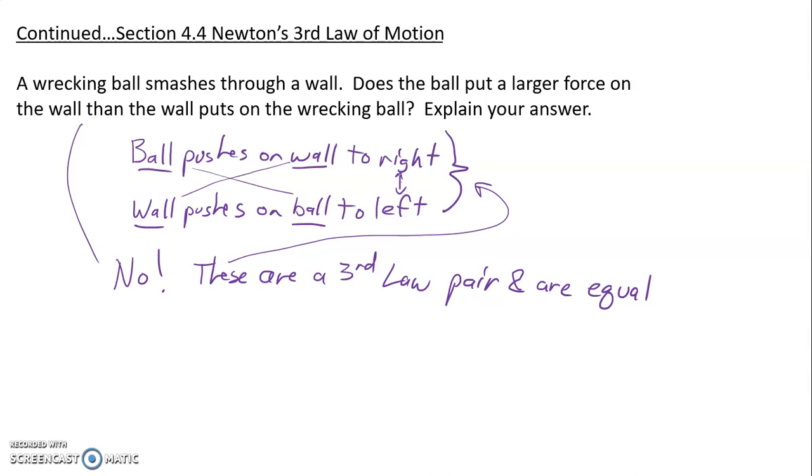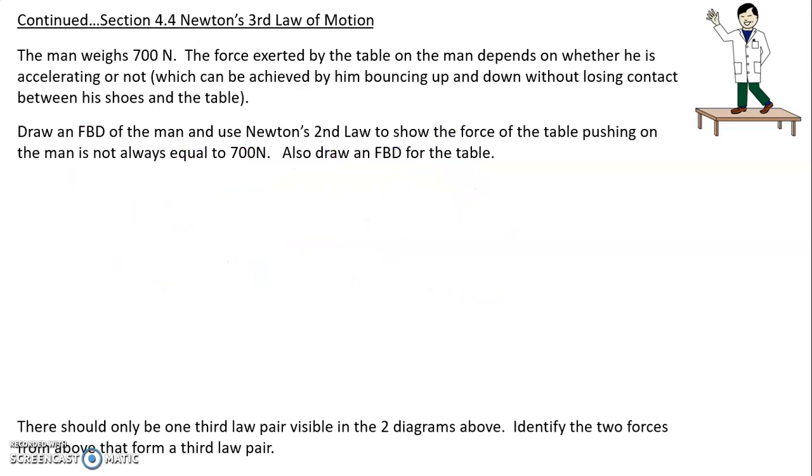Let's look at another example. Here we have a man who weighs 700 newtons standing on a table. And the force that's exerted on the table by the man depends on whether he's accelerating or not. So he could accelerate by jumping into the air or by just bouncing up and down, just getting on the balls of your feet and bouncing up and down.